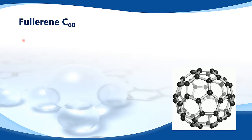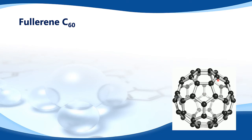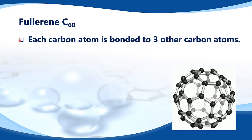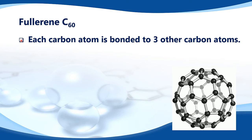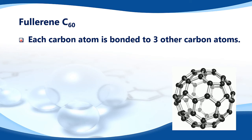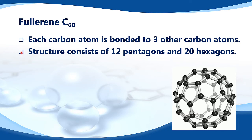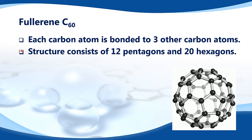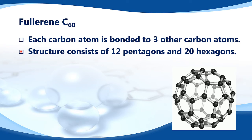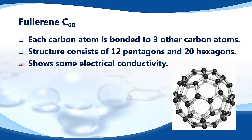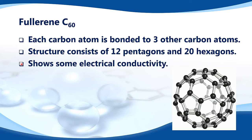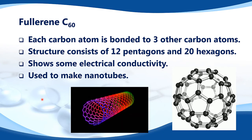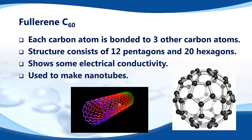Next is fullerene C60 — here's a rotating model of it. Each carbon atom is bonded to three other carbon atoms. The structure consists of 12 pentagons and 20 hexagons. It shows some electrical conductivity, and it is used to make nanotubes.